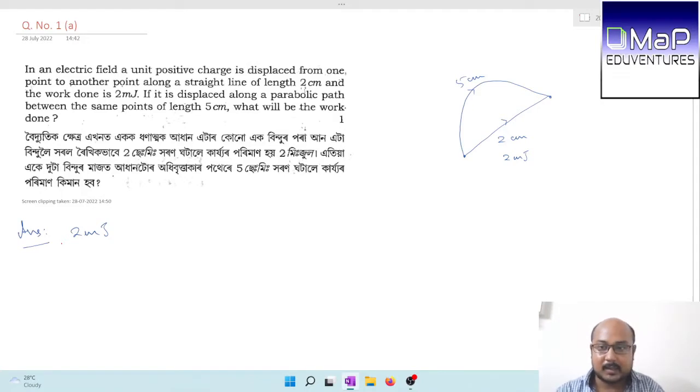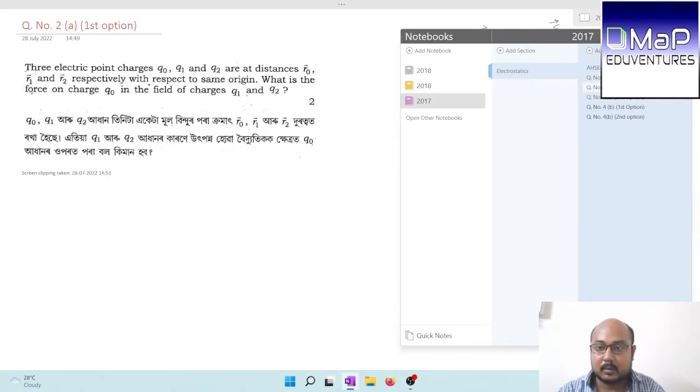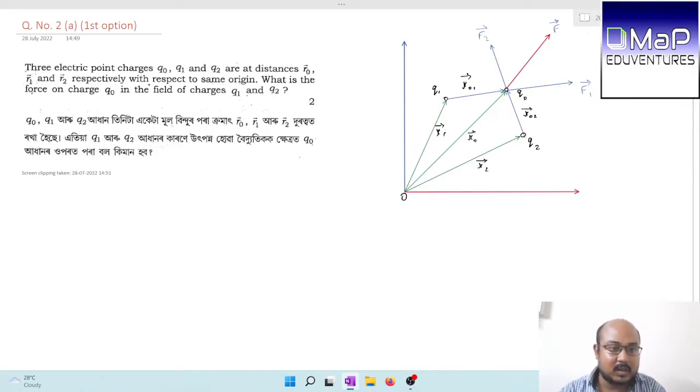Next, question 2A, first option: three electric point charges Q0, Q1 and Q2 are at distances R0, R1 and R2 respectively with respect to the same origin. What is the force on charge Q0 in the field of charges Q1 and Q2? There are three charges placed at three distinct positions with position vectors R0, R1 and R2. We need to find the resultant force on charge Q0.